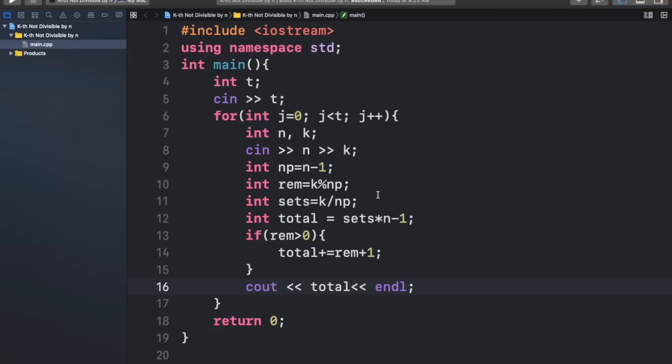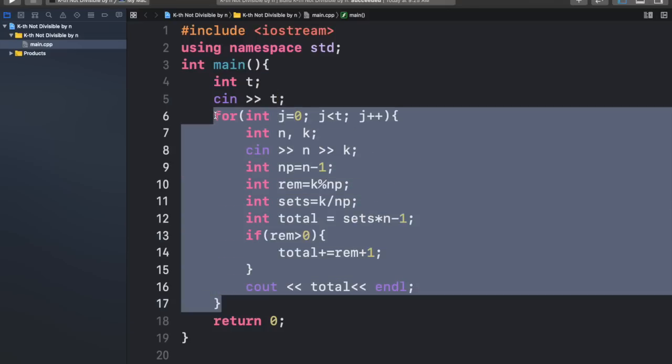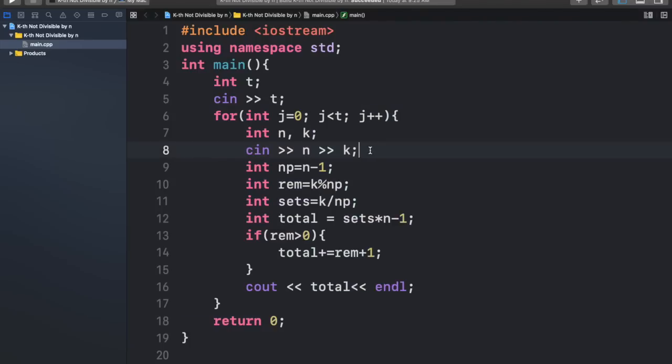Now let's move on to the code implementation of this. So we have our integer t, and we input the t, the number of test cases. Then in this for loop, we are going to input the numbers n and k. We're going to set an integer known as n prime. This is going to be the size of the set. And the size of the set, as discovered previously, would be n minus 1.